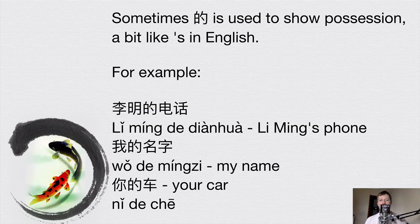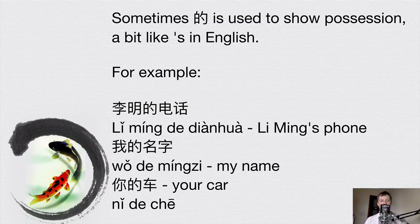For example, 李明的电话 — 李明 is a person's name, 的 shows possession, 电话 means 'phone,' so 李明的电话 means 'Li Ming's phone.' Another example: 我的名字 means 'my name' — 我 means 'I,' and adding 的 turns it into 'my,' showing possession. Similarly, 你的 means 'your' — 你 is 'you' — so 你的车 means 'your car.'